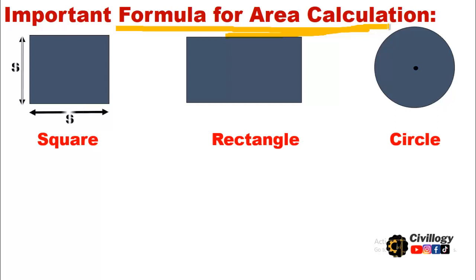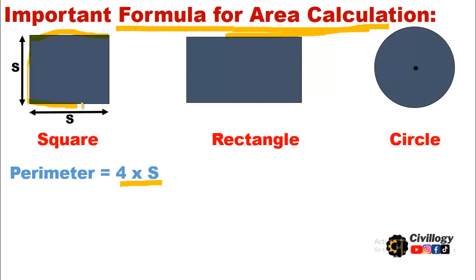For the square, all four sides are equal. You should know the area and perimeter of a square. The perimeter is four times S, which is the length of the outer boundary of the object. The perimeter of the square is 4S and its area is S multiplied by S, which means side multiplied by side.